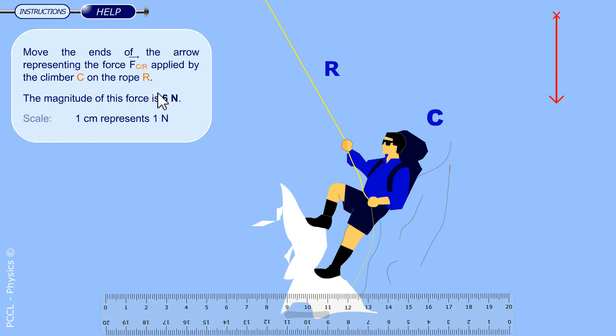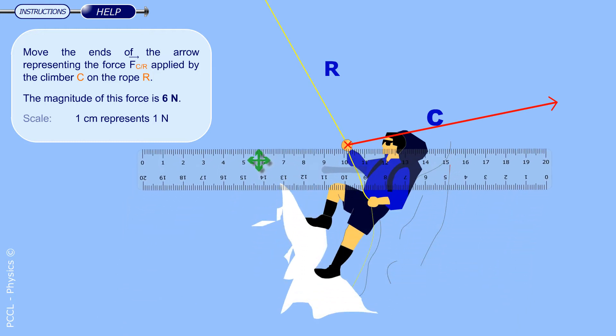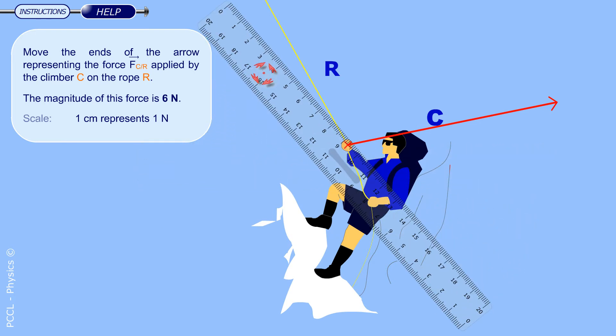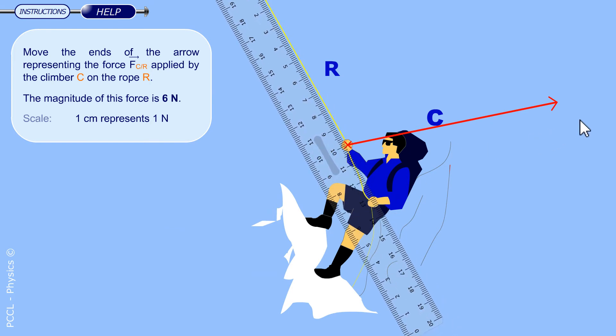The magnitude is six newtons. One centimeter represents one newton. The force is located in the center of the hand. The line of action is given by the rope which greatly simplifies the work. I adjust the length. If one centimeter represents one newton, the length of the vector arrow should be six centimeters.